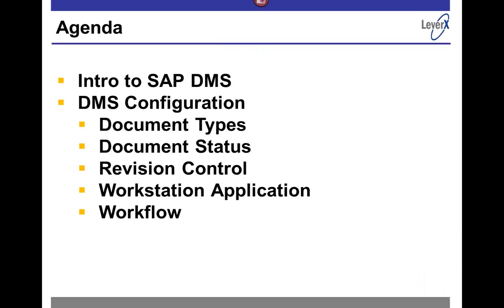As Alan said, we're going to have a quick intro to SAP DMS — talk about what it means and how it works in your enterprise. Then we're going to discuss some configuration in SAP's IMG: how to create document types, how to work with document statuses, how to set up revision control, a discussion on workstates and applications — in other words, tying your actual authoring tools into the document management system — and then how to work with workflow in a DMS.